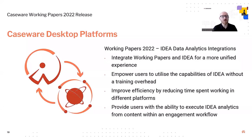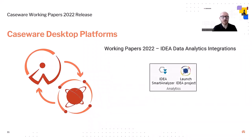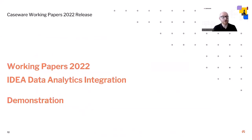For the Working Papers 2022 release, we set clear goals to enhance these integrations: integrate Working Papers and IDEA for a more unified experience; empower users to utilize IDEA capabilities without a training overhead; improve efficiency by reducing time spent working in different platforms; and provide users with the ability to execute IDEA analytics from content within an engagement workflow. We're pleased to announce that Working Papers 2022 includes further enhancements toward these goals. On the Home tab in Working Papers 2022 you'll find a new Analytics group with two options: one to link an engagement file to IDEA and open the platform for ad hoc analytics and sampling, or a second to open the Smart Analyzer in IDEA to run pre-built analytics within the engagement.